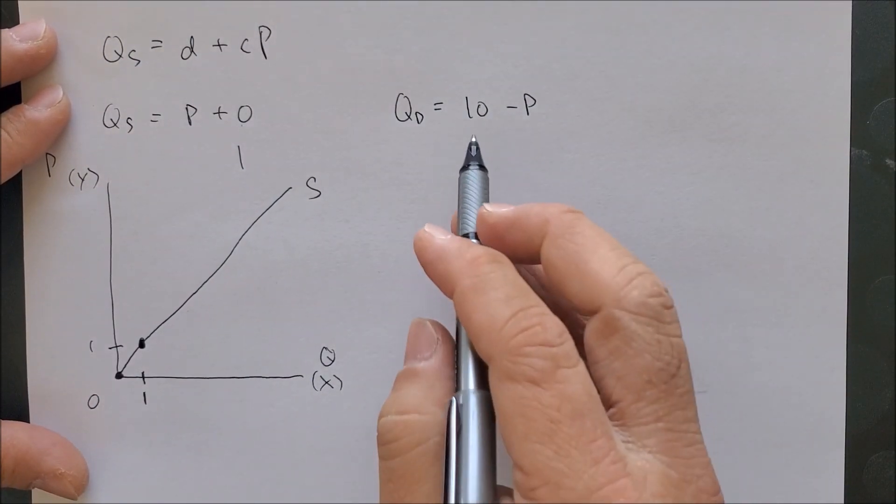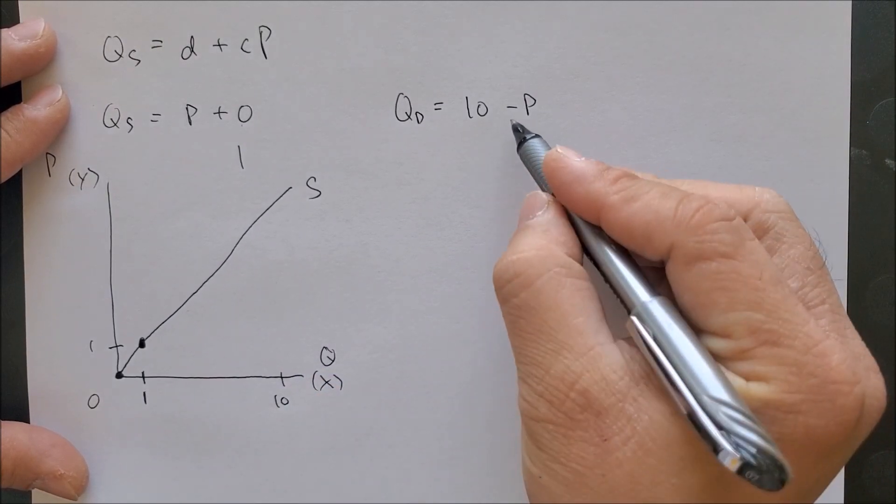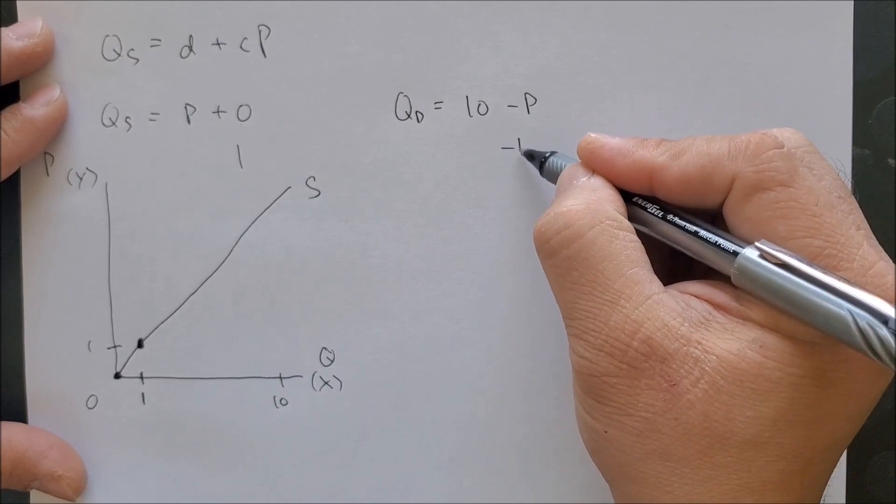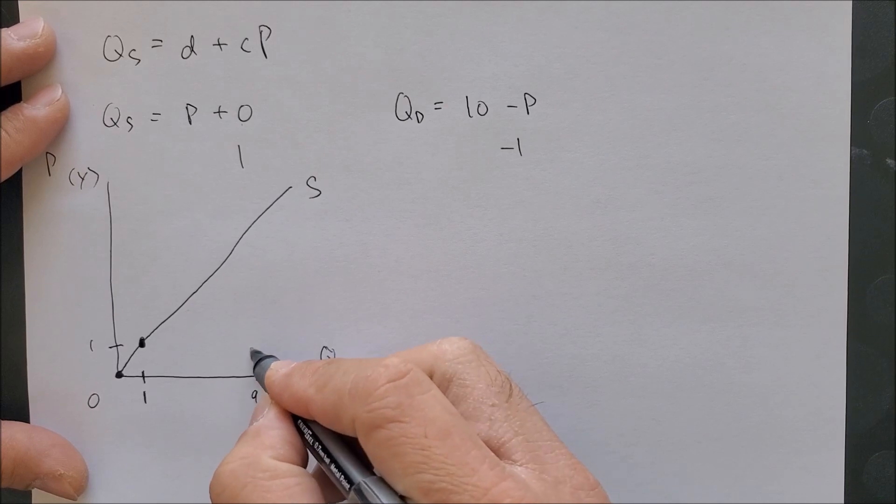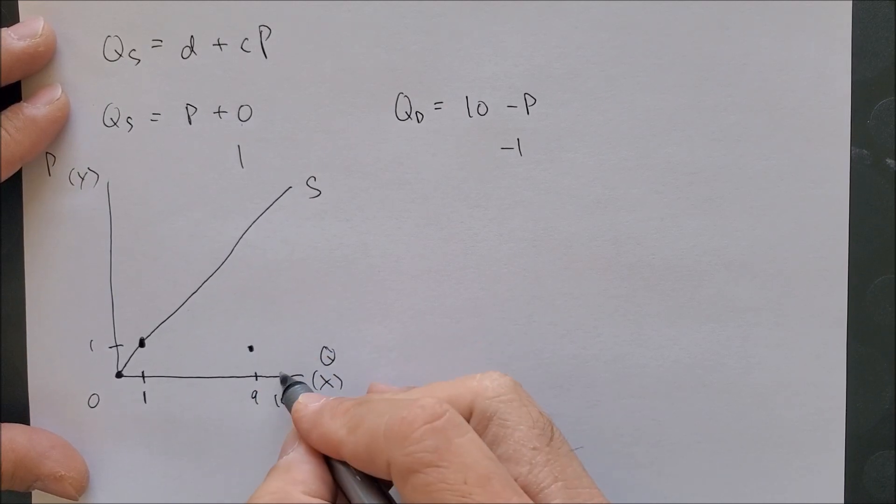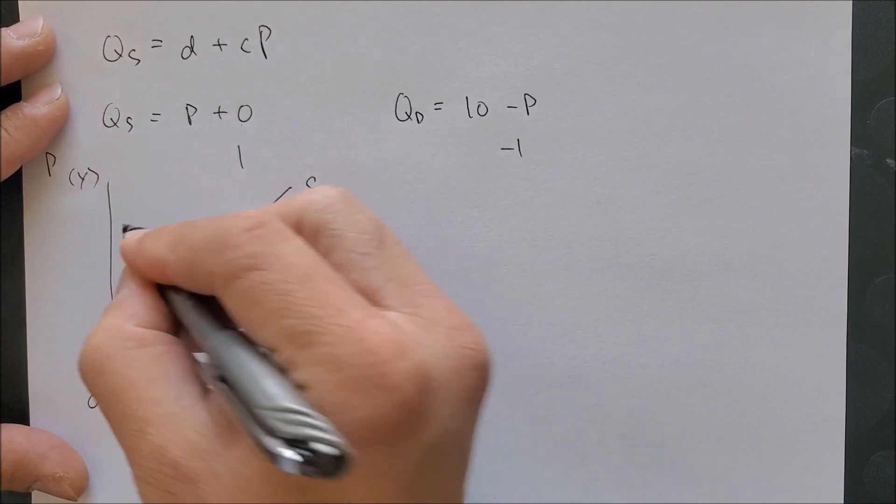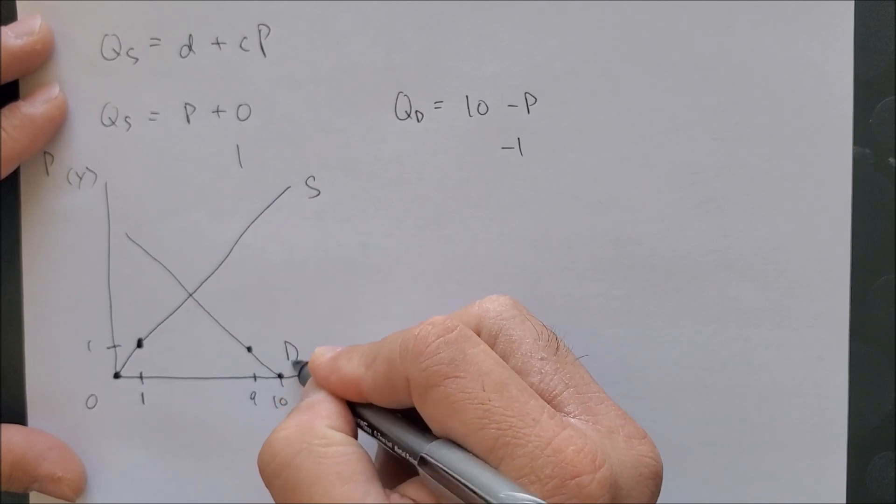Now we can see that 10 is on the x-axis. We have a negative one inverse slope. We're going to run to the left, rise by one, and connect those two to give us the demand curve.